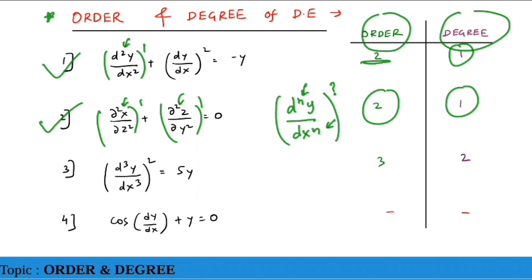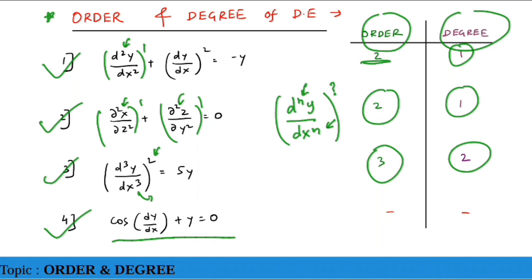Third example: (d³y/dx³)² = 5y. Here n = 3 is maximum, so order = 3, and the power is 2, so degree = 2. The fourth example cannot be considered a differential equation, so we cannot find its order and degree.